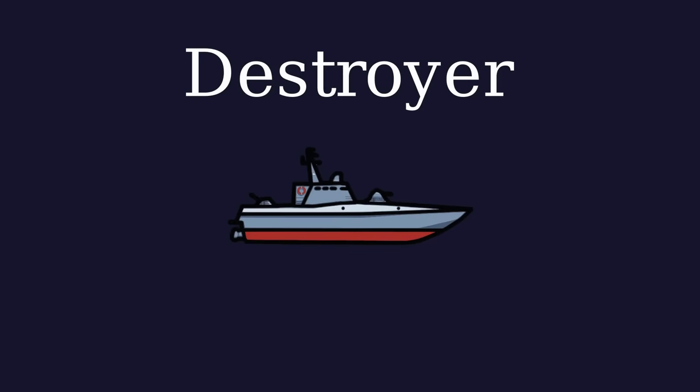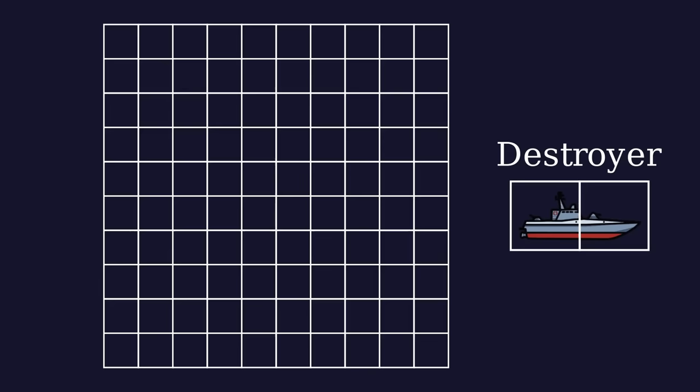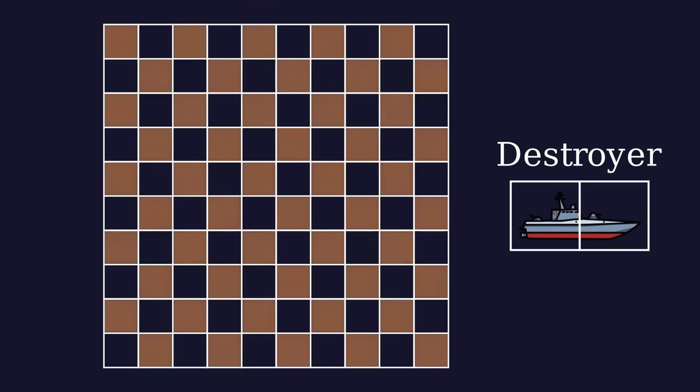The smallest ship in the game, the destroyer, occupies 2 squares. So that means you don't have to shoot squares right next to each other. You can shoot every other square, like a checkerboard pattern.